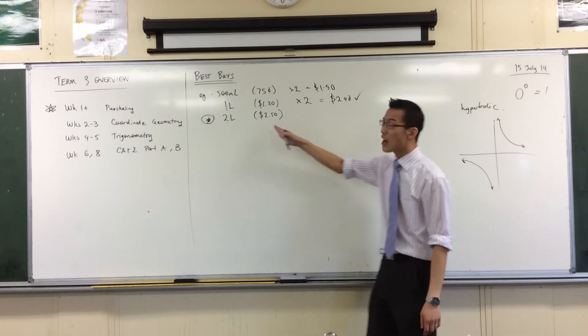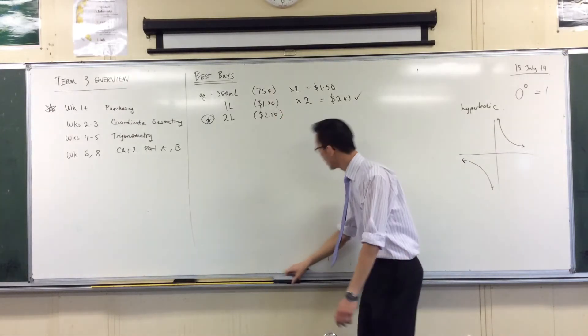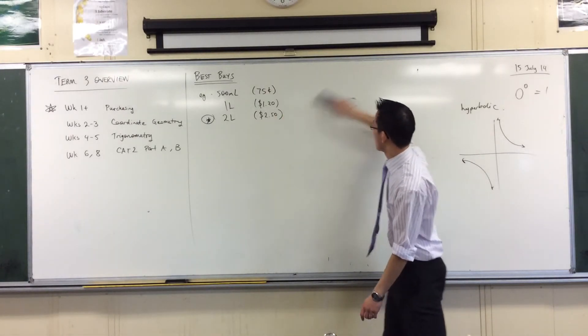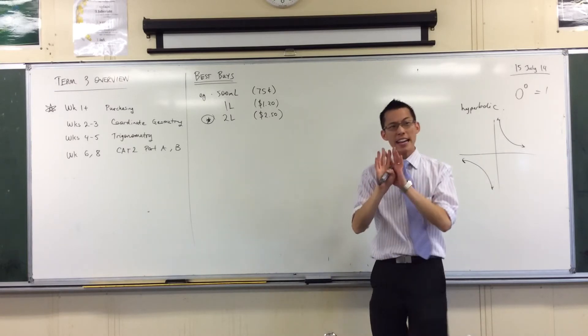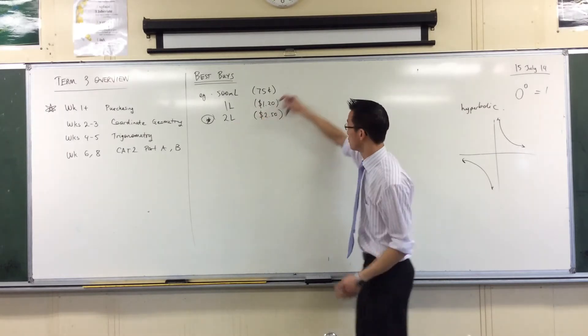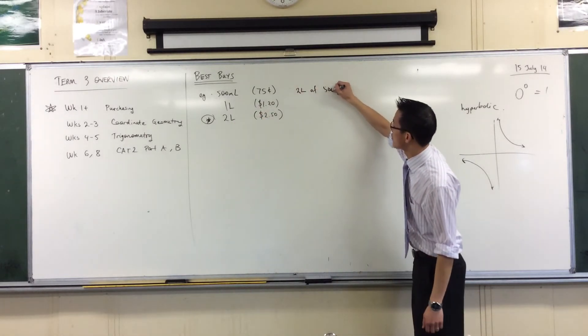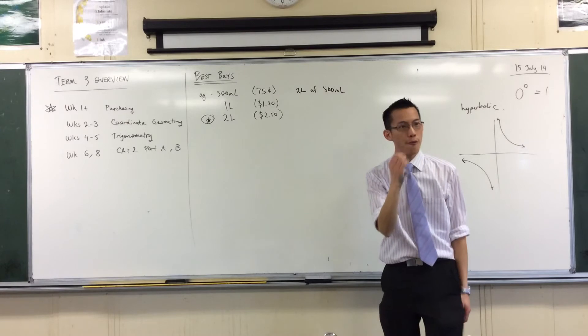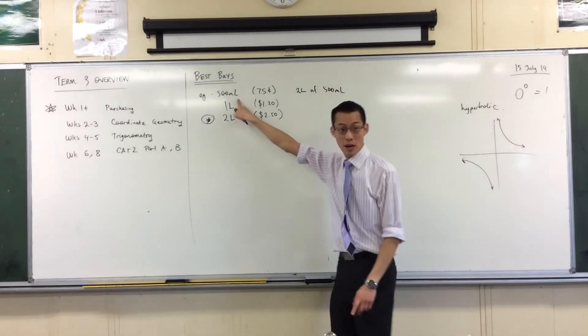Therefore, it'd be nice if I could compare all of them. So what I'm trying to do is get the same amount in all three sizes. Here's an example: if I wanted two liters of 500ml bottles, that'd be four of these, right? That'd give me two liters and that'd be three dollars.